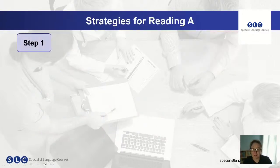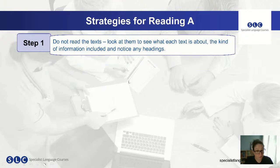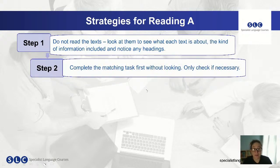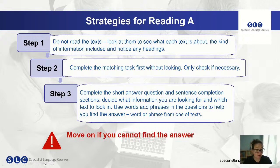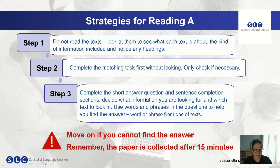The strategies for reading A: first, do not read the text — you just don't have time. Look at them to see what each text is about, the kind of information included, and notice any headings and standout information. Step two, complete the matching task first without looking — only check if you need to. Step three, complete the other task types next. Decide what information you're looking for and which text contains it. Use words and phrases from the questions to help find the answer. If you cannot find the answer, move on — the paper is collected after 15 minutes.